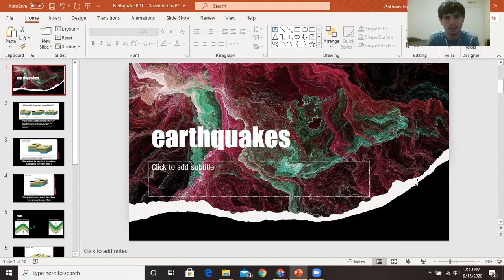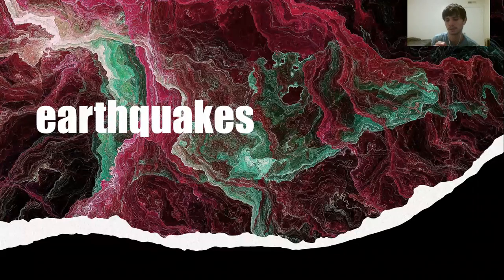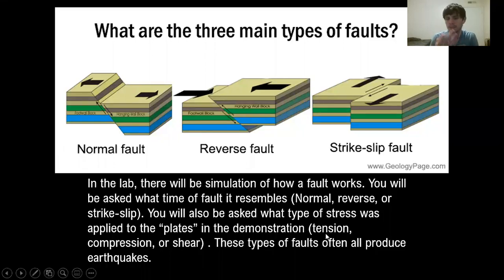To kind of recap and bring in what we learned last week: you guys learned about plate boundaries and the three different types. Those plate boundaries are also what are called faults, and one of the causes of earthquakes are faults. So this should be a little familiar to you. There are three different types of faults, kind of like how there are three different types of plate boundaries.